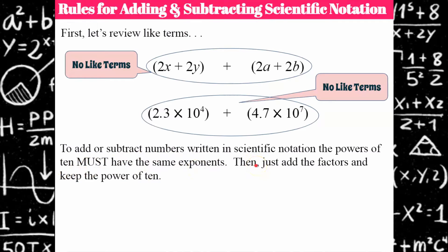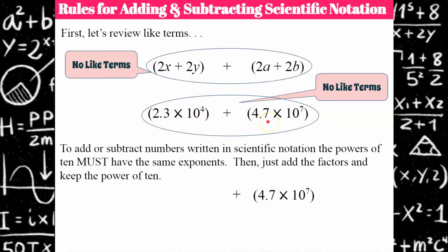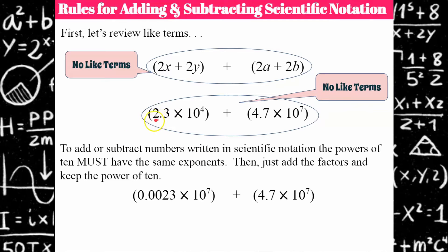Once the powers of 10 match, you just add the factors — the 2.3 and the 4.7 are your factors — and keep the power of 10. To do this, we're going to always keep the larger exponent and change the smaller to match the larger. That's just a trick I learned. So we need to make this power a power of 10 with an exponent of 7.